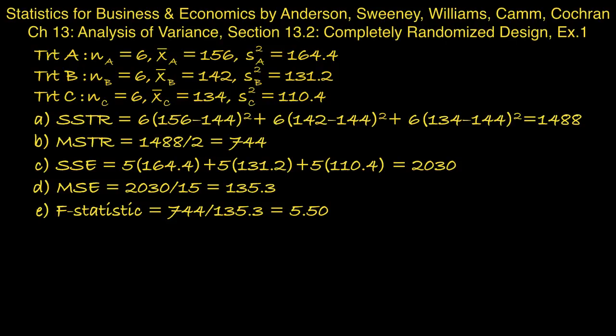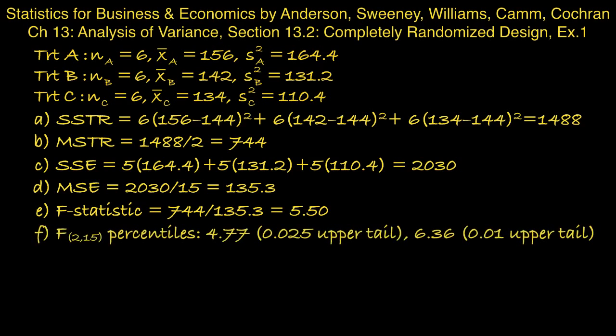And part F, at the alpha equal 0.05 level of significance, test whether the means for the three treatments are equal. So we need to find the p-value for that F-statistic. And if we look at the F-table, where we have two numerator degrees of freedom and 15 denominator degrees of freedom, there's a couple of percentiles that are of relevance here. There is the percentile that leaves 0.025 in the upper tail, and that's 4.77.